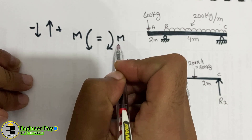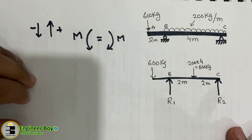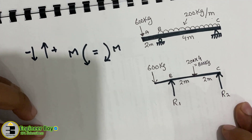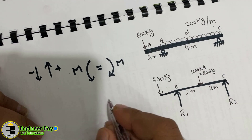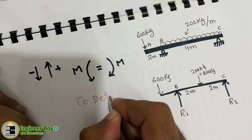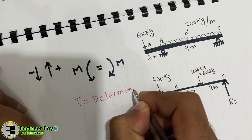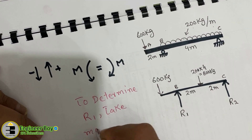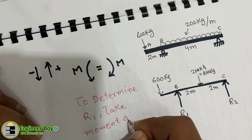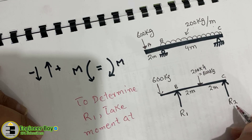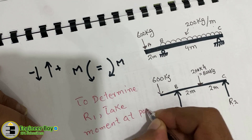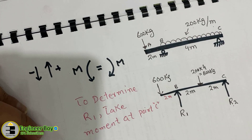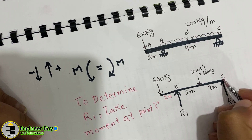To find R1, we take moments at point C (where R2 acts). The distance from R1 to point C is 2 + 2 = 4 meters. R1 acts upward and creates a clockwise moment about C, while the other loads create counter-clockwise moments.